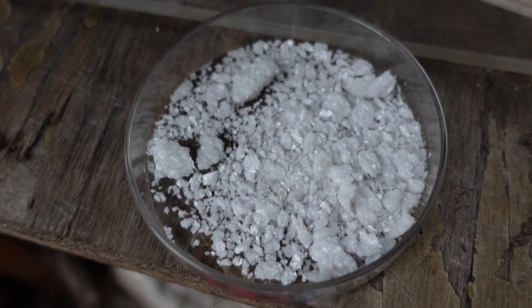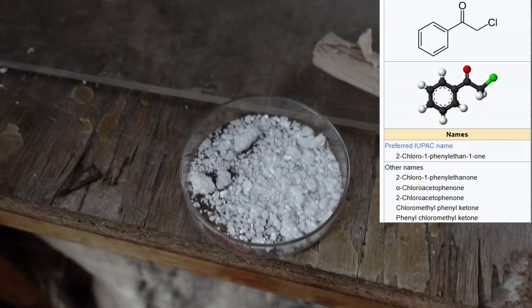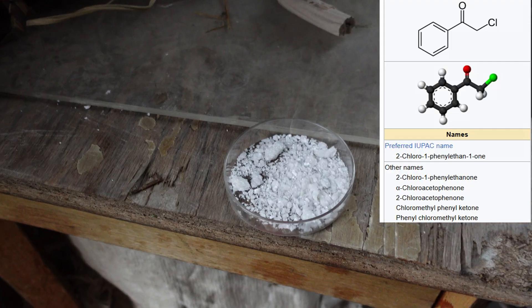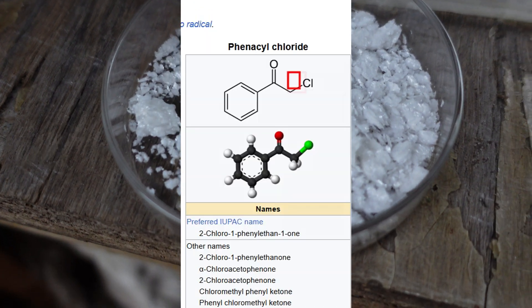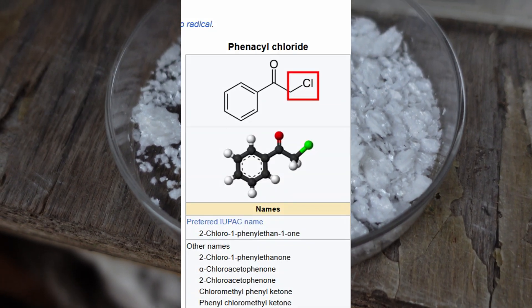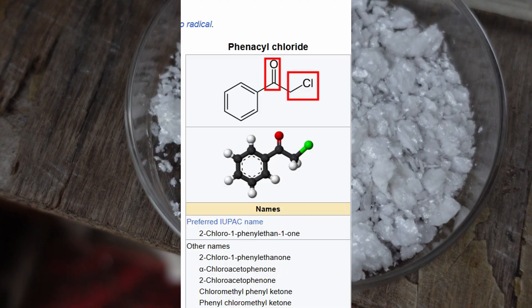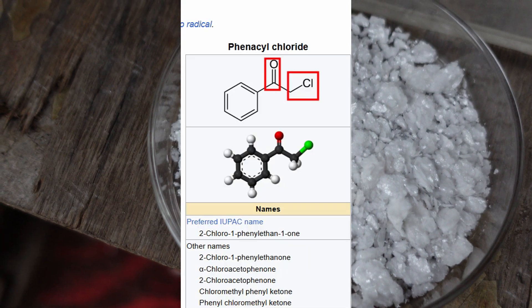Hello everyone. This is chloroacetophenone that I recently synthesized. I need this substance for organic synthesis. It has an active chlorine atom and a carbonyl group, which makes it a very useful reagent in organic chemistry.